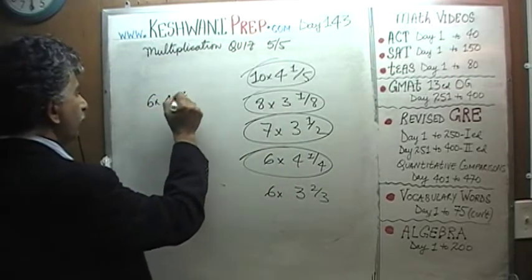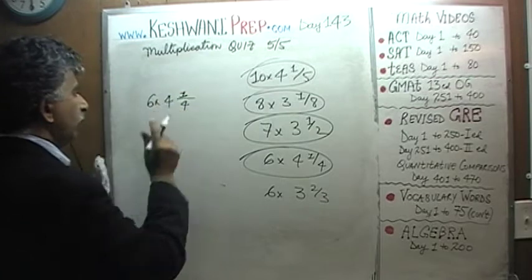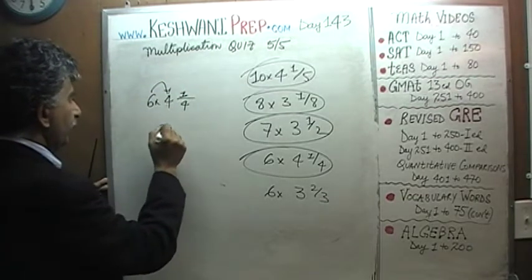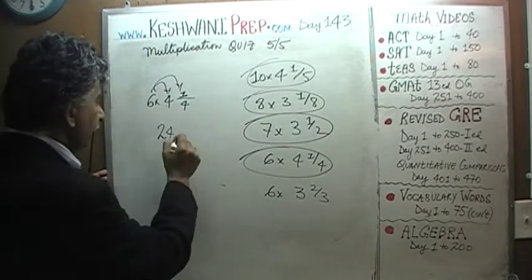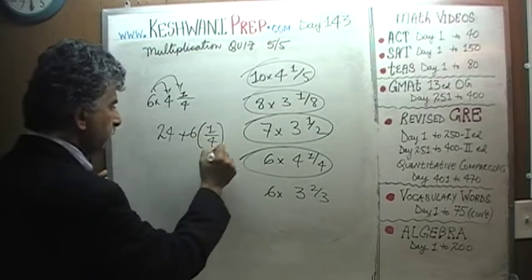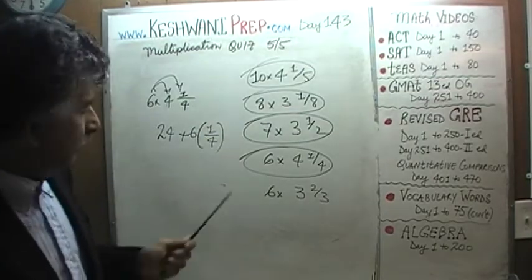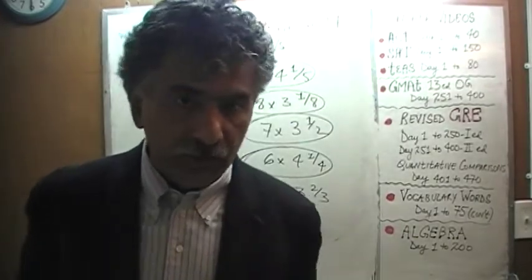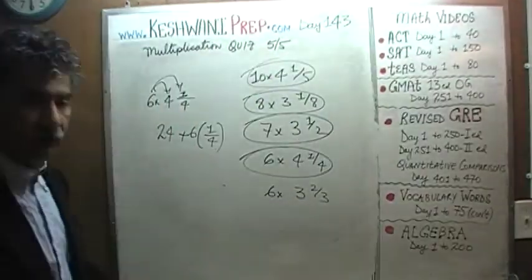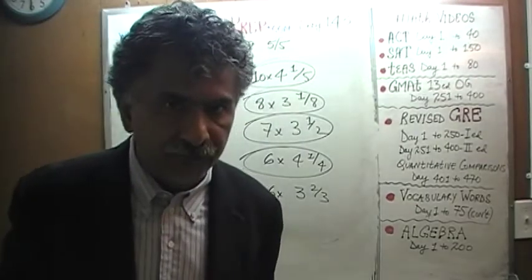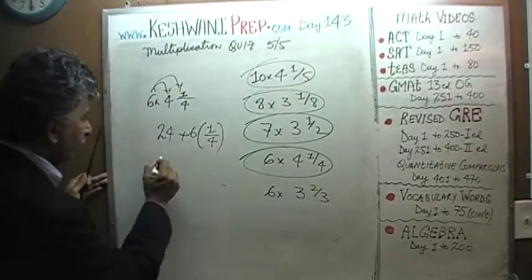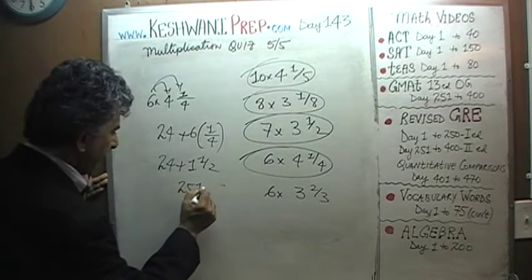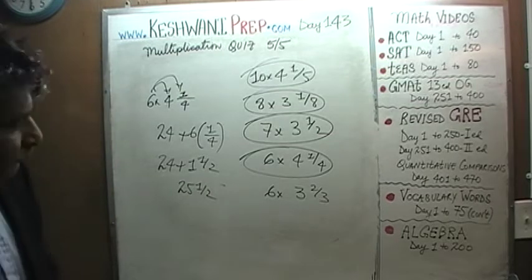Six times four and a quarter: six times four is twenty-four, and six times a quarter is six quarters. Four quarters make one, another two quarters make a half — six quarters is one and a half. So twenty-four plus one and a half is twenty-five and a half.